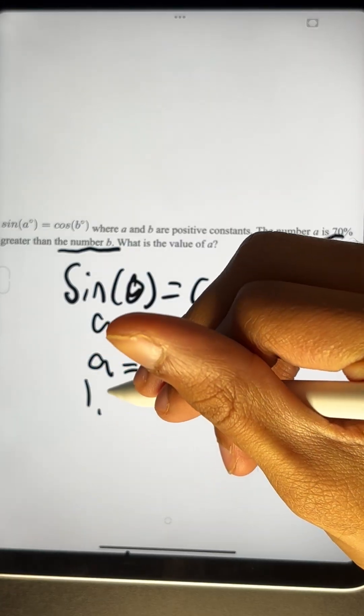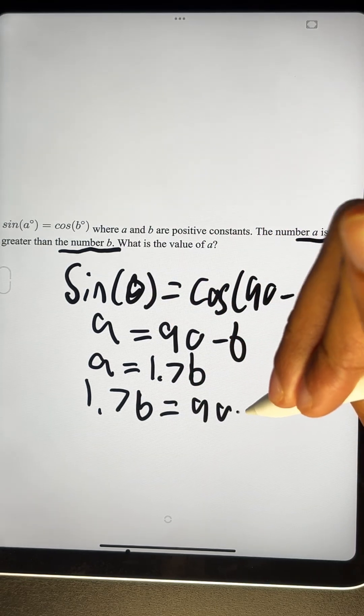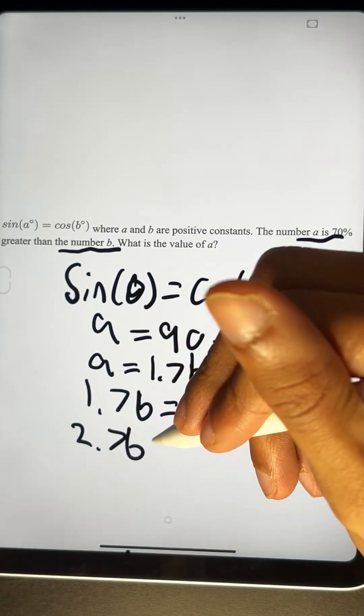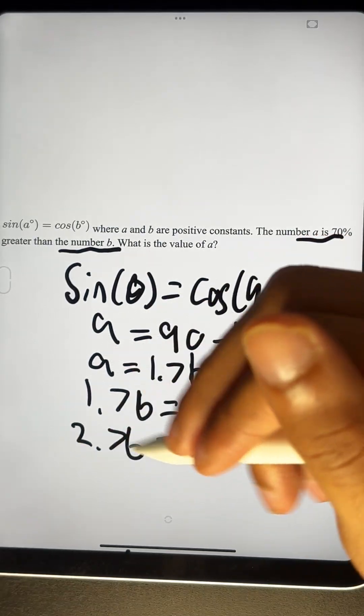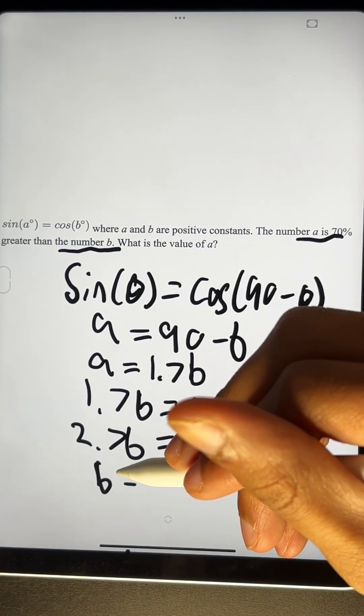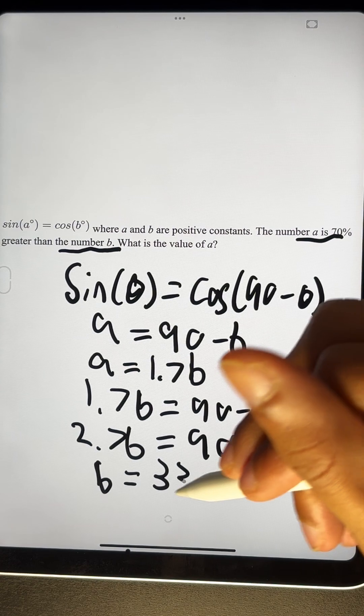So 1.7B is equal to 90 minus B. We can add B to both sides, so 2.7B is going to be equal to 90. And if you divide both sides by 2.7, we get B is equal to approximately 33.33.